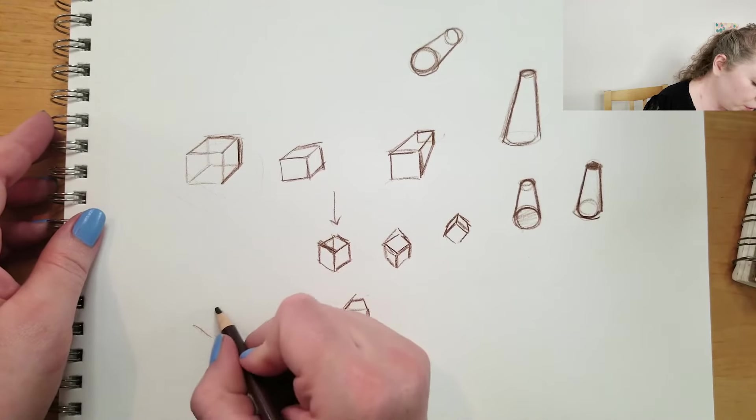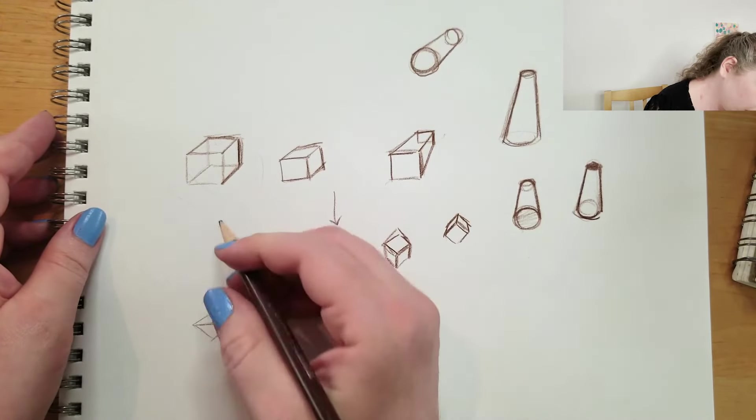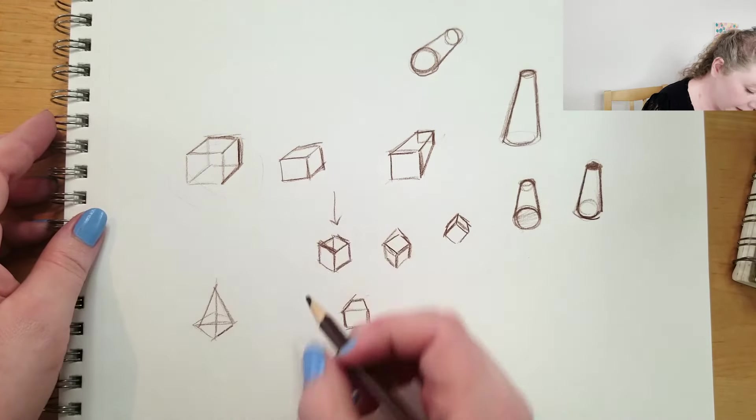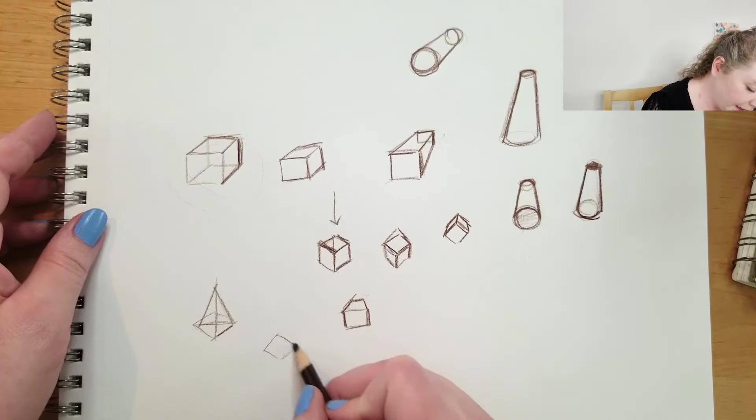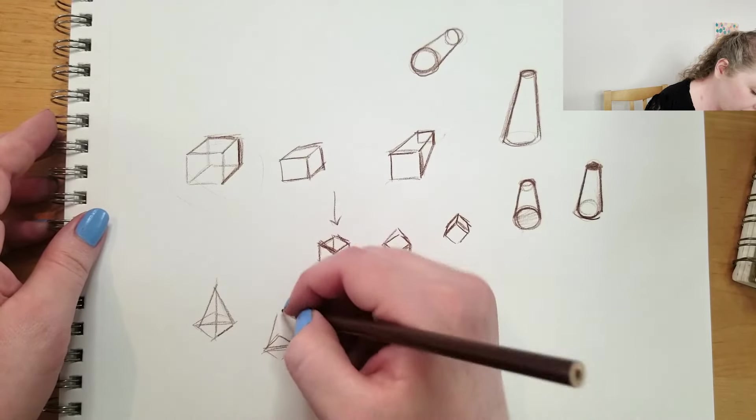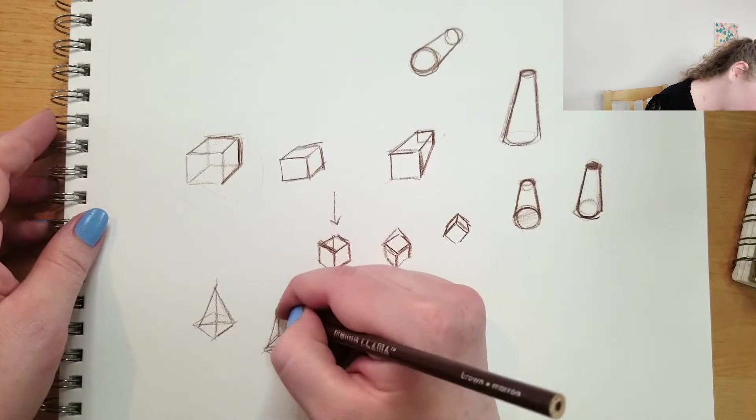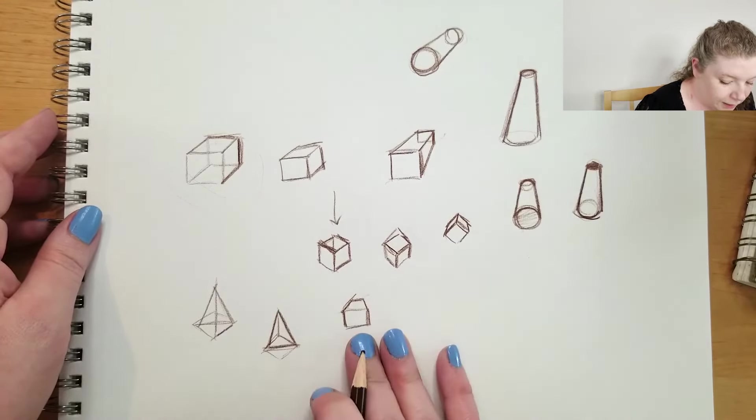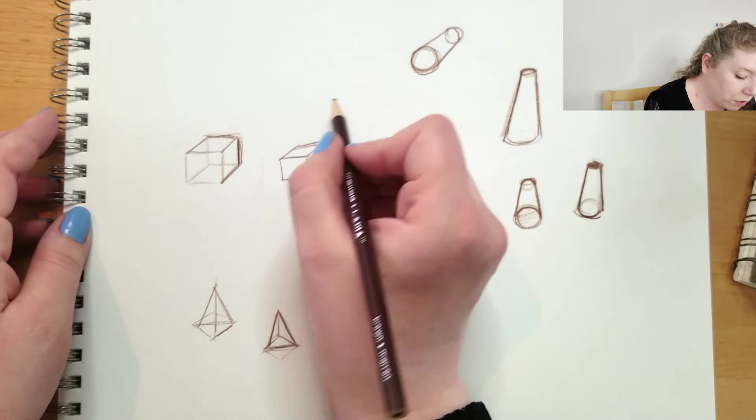You can also do triangles. If you notice, I did a square and I cut it in half to make a triangle. That's one way to do it. And then I just connected the points. You can do triangles too, but mostly squares and then circles.